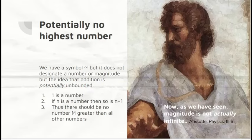All that we really say about infinity is that there's potentially no highest number. We've got a symbol infinity, but it doesn't designate a number or a magnitude. But the idea that addition is potentially unbounded goes from a series of axioms. Since 1 is a number, if n is a number, so is n plus 1, thus there should be no number m greater than all other numbers. This is what Aristotle means when he says magnitude is not actually infinite, only potentially.